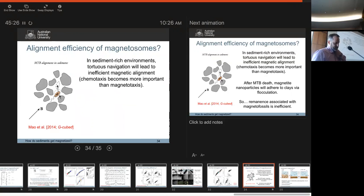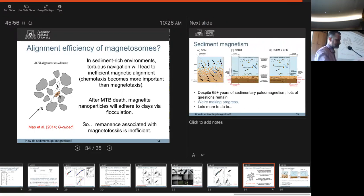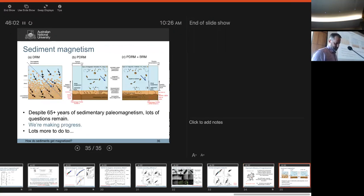Just a note about the alignment efficiency of magnetosomes. What Ramon Egli's group would say is that if the bacteria are living in sediment-rich environments, the magnetotactic bacteria will resort to chemotaxis rather than magnetotaxis, and an inefficient magnetization arises. They get flocculated just like any other magnetic particles. And so you can expect very inefficient magnetizations for magnetofossils as well, of the order of a couple of percent.